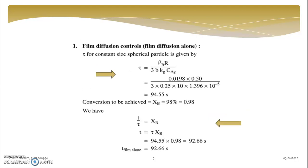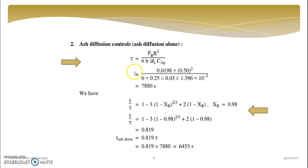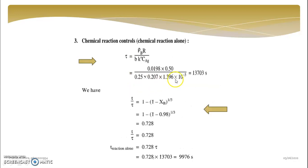If you see this first value for film diffusion is 94.55, tau is this small value. Then the value is 7880, and then now it is 13703 second.